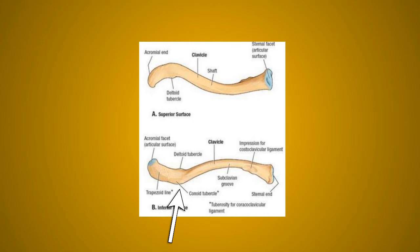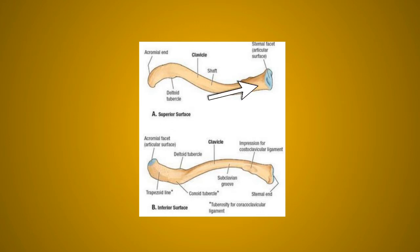The inferior surface of the lateral one-third presents an elevation known as the conoid tubercle, and a ridge known as the trapezoid ridge. Remember these two landmarks: the conoid tubercle and the trapezoid ridge.